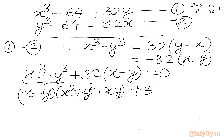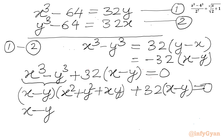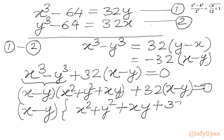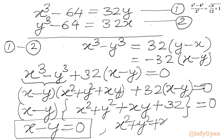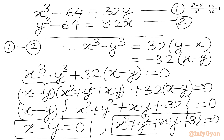In the other bracket we write 32 times (x minus y). Now I can take (x minus y) common out, giving us (x minus y) times (x squared plus y squared plus xy plus 32) equal to 0. Now we can apply the product zero rule, so either x minus y equals 0, or x squared plus y squared plus xy plus 32 equals 0. We have to solve these equations for our real solutions.